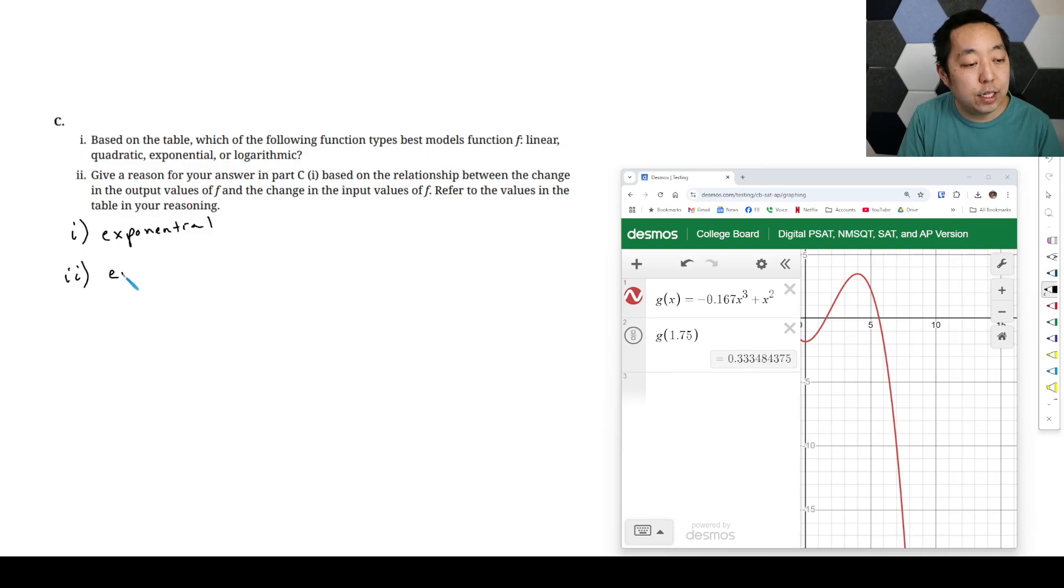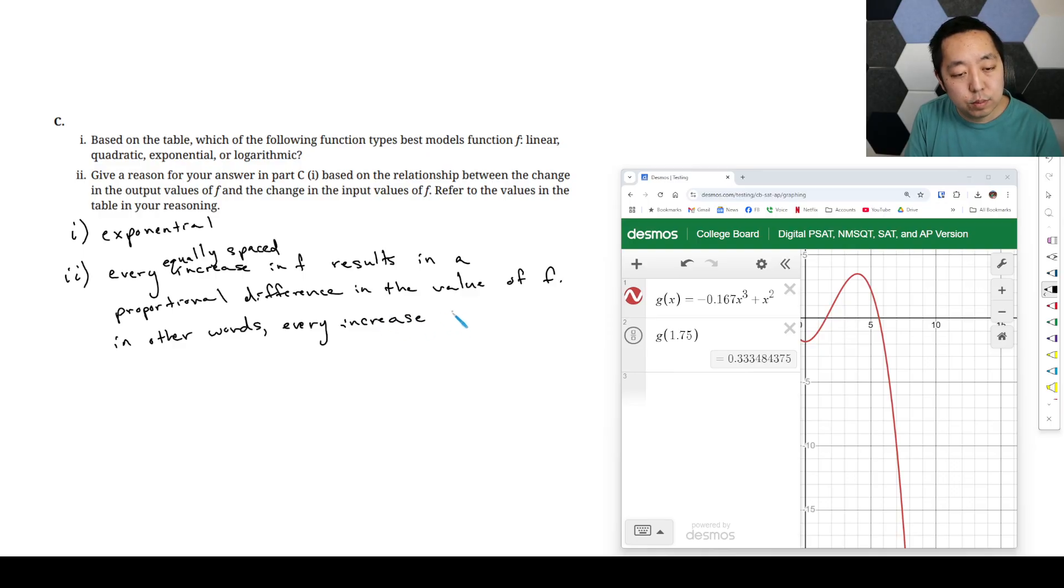And that is, every equally spaced increase in F results in proportional difference in the value of F. In other words, every increase in one by one results in the value being multiplied by one half. And that's what makes it exponential in nature.